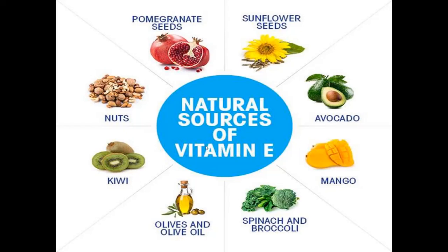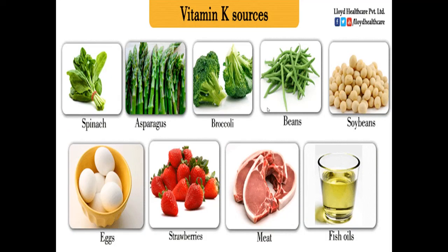Sources of vitamin E: pomegranate seeds, sunflower seeds, avocado, mango, spinach and broccoli, olives and olive oil, kiwi, nuts are some sources rich in vitamin E. Vitamin K: spinach, asparagus, broccoli, beans, soybean, eggs, strawberries, meat and fish oil are some of the sources rich in vitamin K.